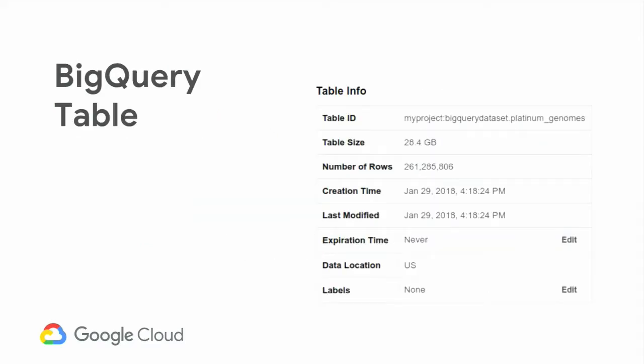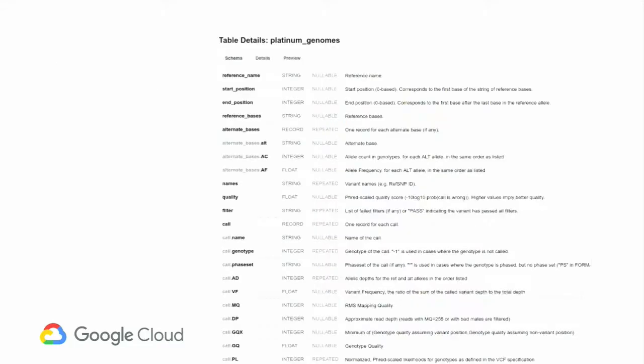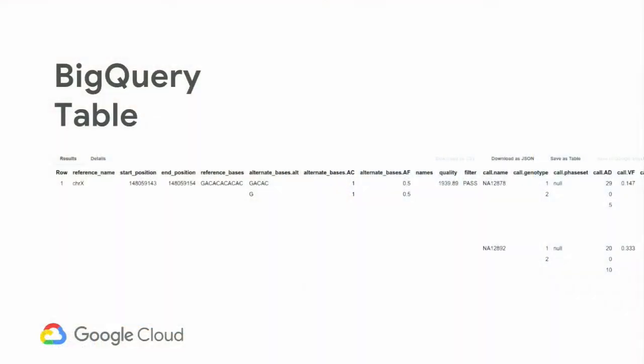So now, what does this look like in a BigQuery table? This is basically an example table loading platinum genomes, six samples from it. It contains GVCF files as well, so non-variant records. It has about 261 million rows. This is what the schema looks like. Basically, it's generated dynamically based on the input and everything is properly typed. And this is an example of what a row looks like. So basically, there is one row for each variant and all the samples are nested under. And there's basically a one-to-one mapping of everything that's in a VCF file to everything that shows up in BigQuery.